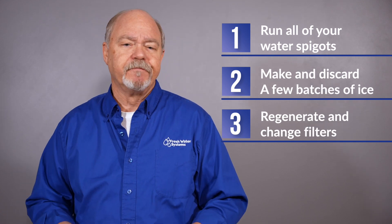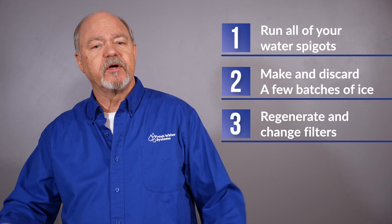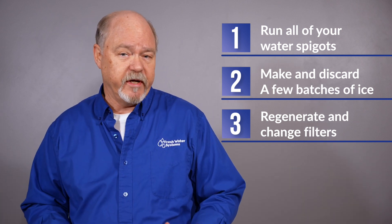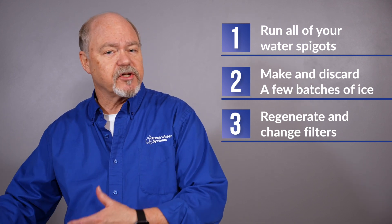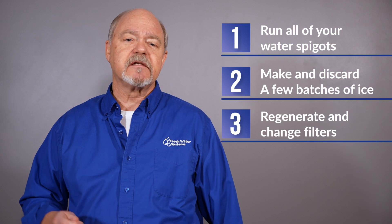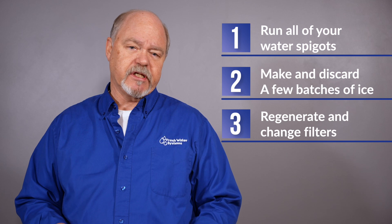When the boil alert has been lifted, there are a few things you want to do to flush all the water out of your house, out of all your fixtures and appliances. Run all your cold water spigots for a couple of minutes, and run the hot water spigots for a bit longer because there's more water to turn over from the hot water heater. Flush the ice machine by making and discarding a few batches of ice. If you have a water softener, put it through a regeneration cycle.